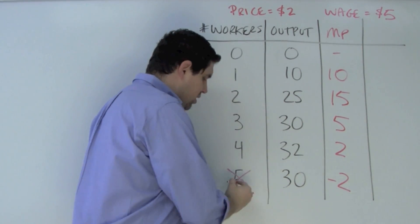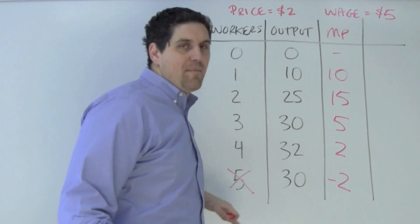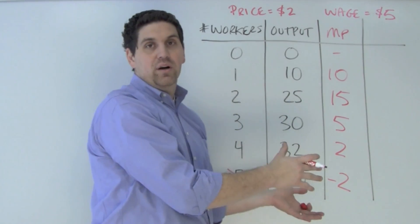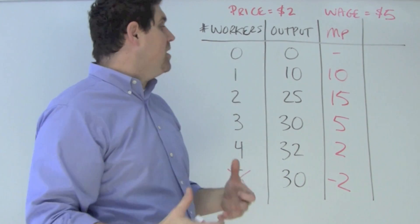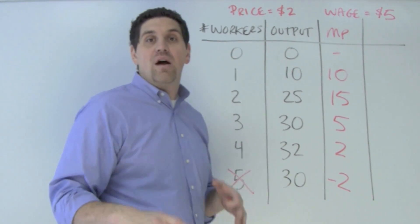Now I'm not going to hire 5 workers no matter what because I have negative marginal returns. So that one's automatically out, not going to hire that many workers. This gives me the output generated from the workers. What I need to know now is how much money do they generate? How much revenue does each worker generate? Then I can figure out if they're worth hiring or not.